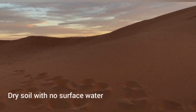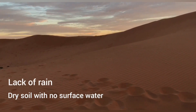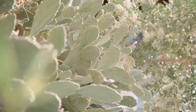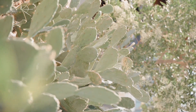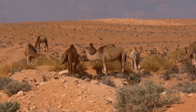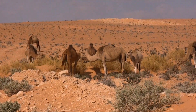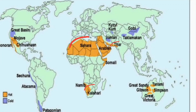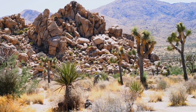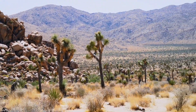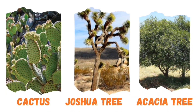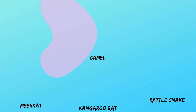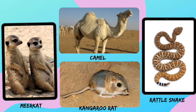Deserts are the driest places on the earth. They receive very less rainfall throughout a year. Here, the soil is dry with no surface water. They can be either hot places or cold. Sahara, Kalahari, and Thar Desert are hot deserts, while Gobi Desert in China is a cold desert. Few examples of organisms living in deserts are cactus, Joshua tree, acacia tree, meerkat, camel, rattlesnake, and kangaroo rat.